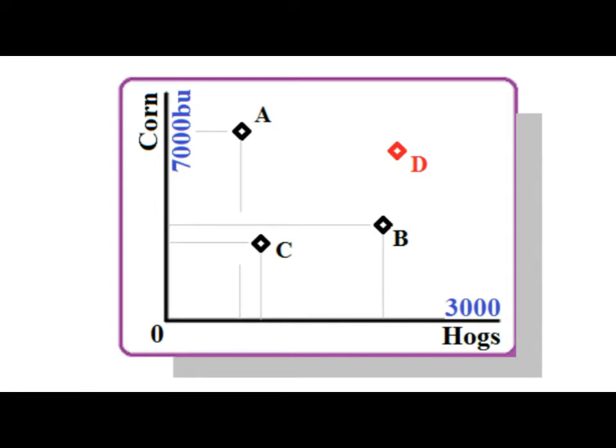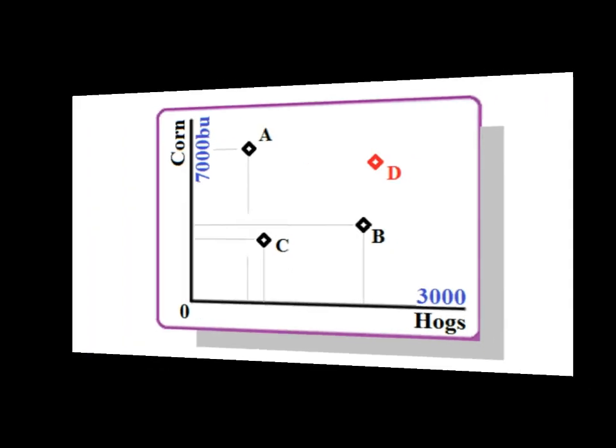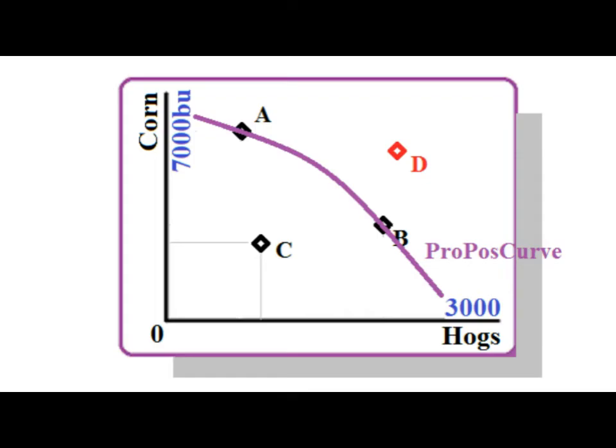In this model, the economy can produce 3,000 hogs or no corn, or vice versa. The plots are various combinations. When we plot the extremes, a curve is produced that reflects the limits of the economy.